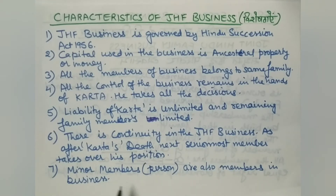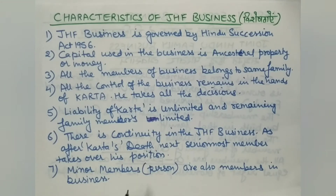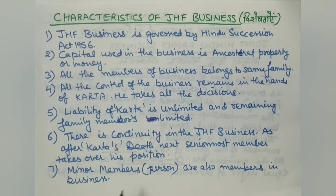Minor members or persons are also members in the Joint Hindu Family Business. By birth, a child has a right over the ancestral property. Even if a child is born, they immediately become a minor member of the family business.